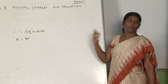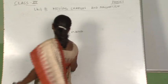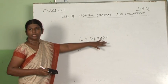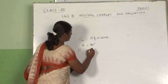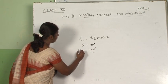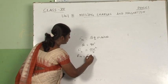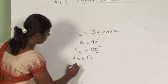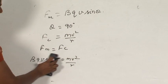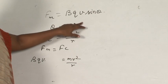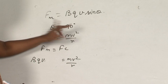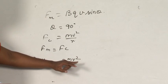If the charge is moving in a circular path, what type of force will act? There will be a centripetal force. The magnetic force BQV sin theta equals the centripetal force MV squared by R. When theta equals 90 degrees and sin theta equals 1, we get BQV equal to MV squared by R.